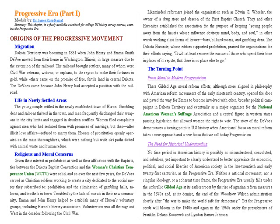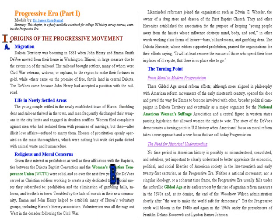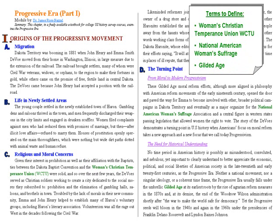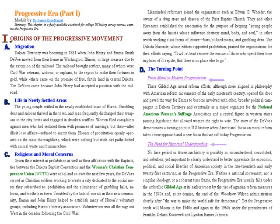Let's add some color. The colors identify divisions and subdivisions that are parallel to one another. The outline's title is simply the chapter title — that's in orange: 'The Progressive Era, Part One.' The first major division of the chapter is in dark red: 'Origins of the Progressive Movement.' This major chapter division is subdivided into four sub-points shown in blue: migration, life in the newly settled areas, religious and moral concerns, and the turning point. The author has also emphasized certain terms in green — these are not sub-points but vocabulary terms you should be able to define when finished. Note that 'the turning point' has additional divisions of its own.